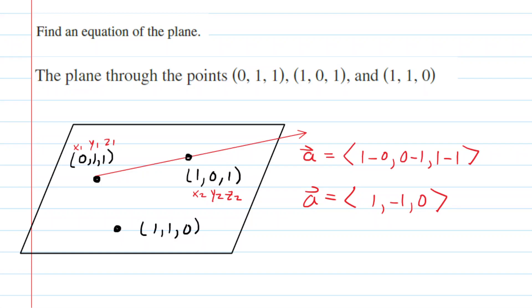Now we want to do the same thing to come up with what we can call vector B. So we'll extend another vector from that initial point through the third point. We're going to call that vector B. And then these coordinates over here can now serve as our X2, Y2, and Z2. So again, we can come up with a vector representation by subtracting the second set of coordinates by the first set of coordinates. So 1 minus 0 for X, 1 minus 1 for Y, and then 0 minus 1 for the Z.